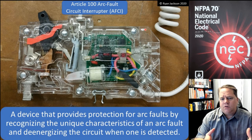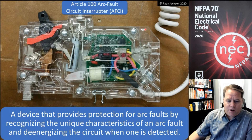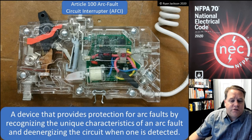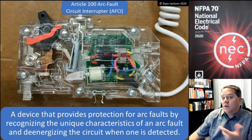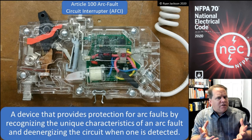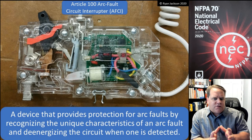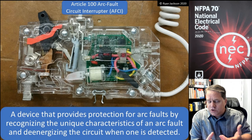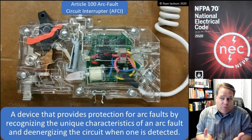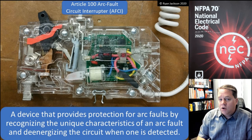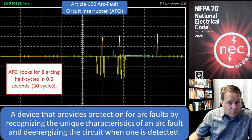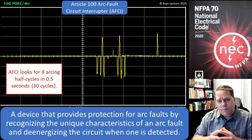What does that circuit board do? Well, it recognizes the unique characteristics of an arc fault and shuts off the circuit when it sees one. How exactly would you sense the unique characteristics associated with an arcing fault? Basically, we look at the sine wave. In an arc fault circuit interrupter there is essentially an onboard oscilloscope that reads the sine wave.